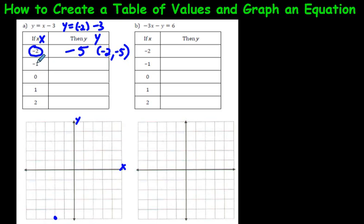For negative 1, I put it where the x is — so it's negative 1 minus 3 and you get negative 4. Let's plot that: negative 1, negative 4 — 1, 2, 3, 4. This should form a straight line, hopefully. It should go just like this.